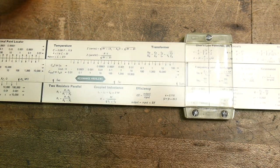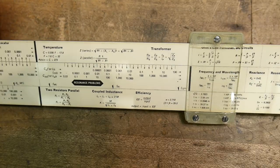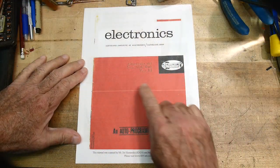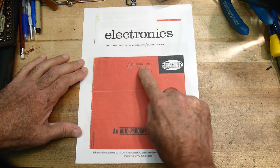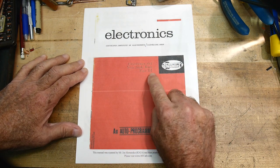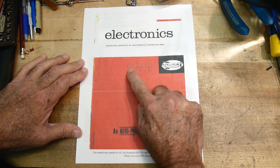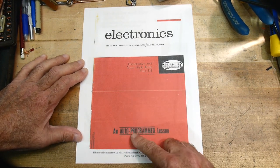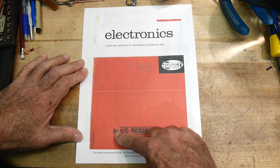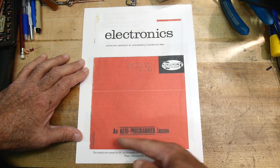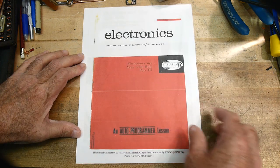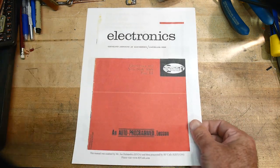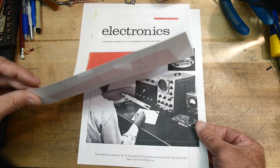It says reactance and resonant decimal point locator. That's pretty weird. And it says reactance problems and resonance problems. So we're going to solve a resonance problem. So let's take a look at the four-volume set of instructions this thing comes with. This is part three. There's four parts. One, two, three, and four. This is part four. It says electronics and your slide rule. An auto-programmed lesson. So I guess auto-programmed means it's your own pace or something.